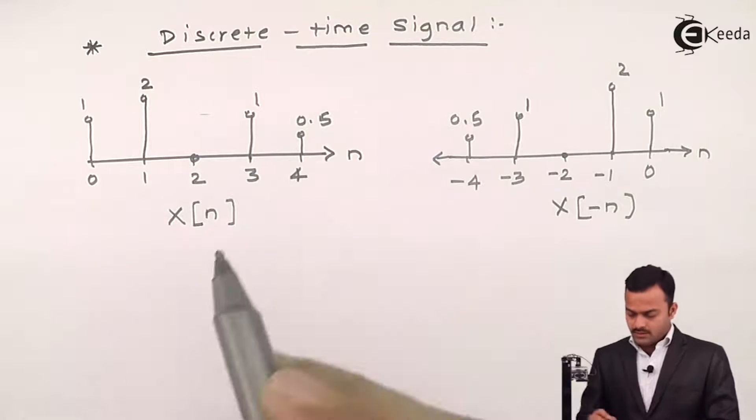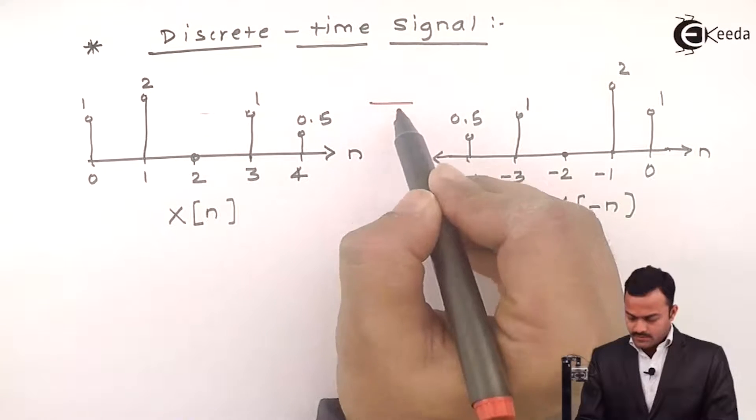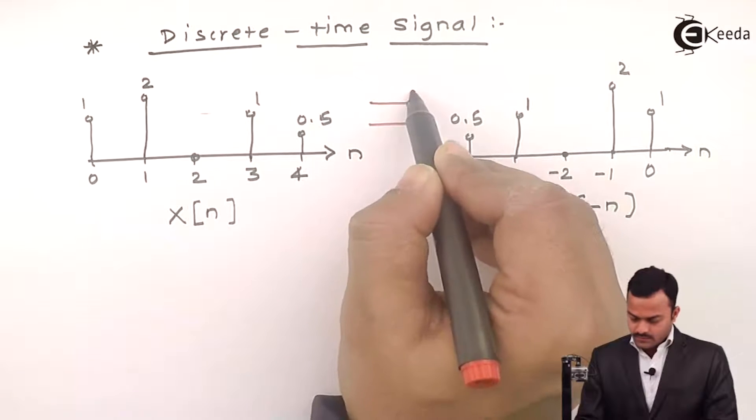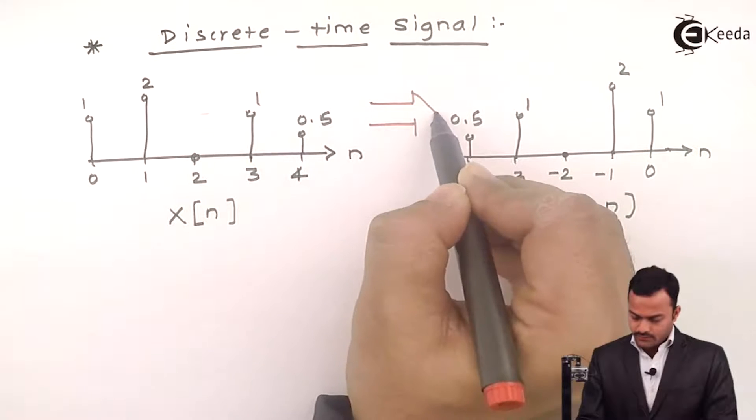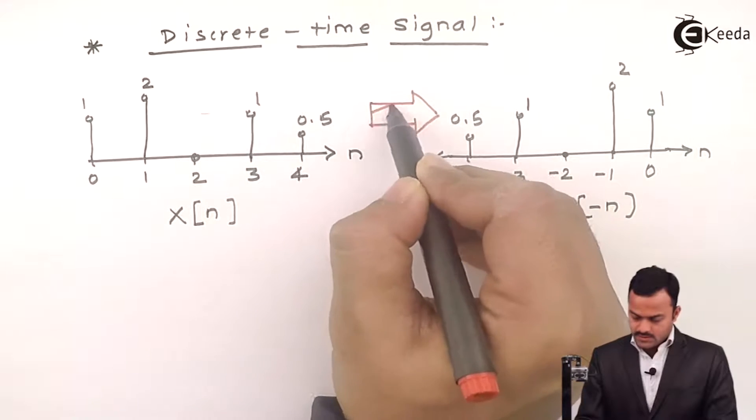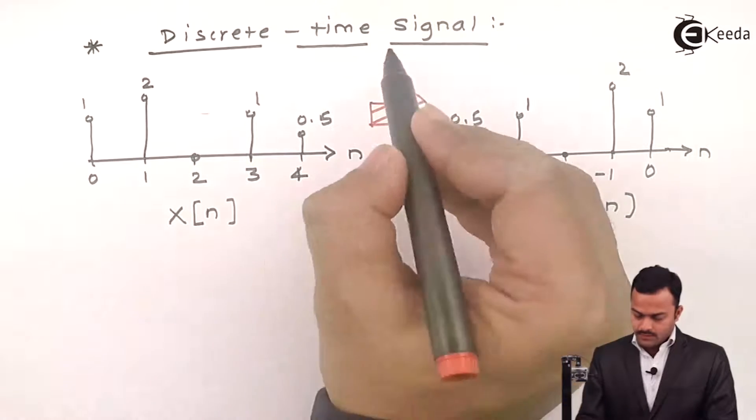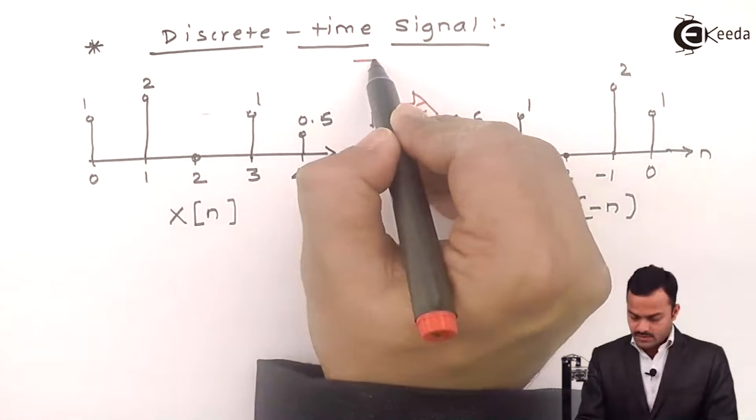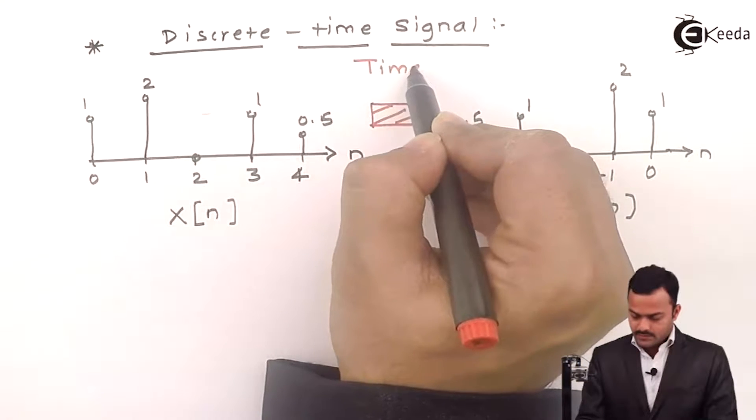So what we have done over here? Original signal X of n was given, we obtain X of minus n just by taking mirror image of X of n which we call as time reversal.